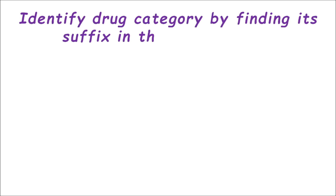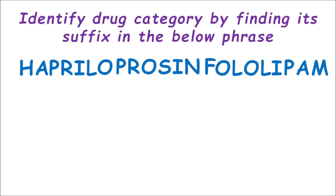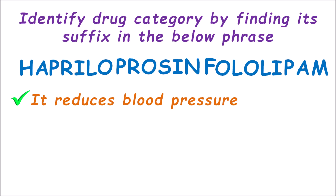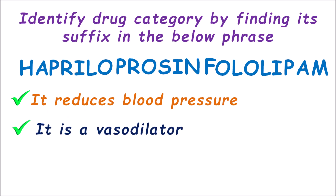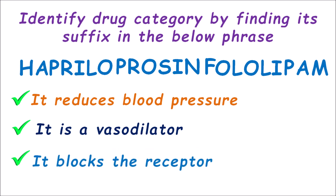Let us go to the next puzzle. Identify the drug category by finding its suffix in the below phrase. This is a long phrase mixed with different types of suffixes, and from it we have to identify one drug suffix matching the following clues: first, it reduces blood pressure; second, it is a vasodilator; third, it blocks the receptor. These puzzles increase our understanding by analyzing drugs and their suffixes — comparing suffixes, categories, and pharmacological actions helps us remember them more easily.